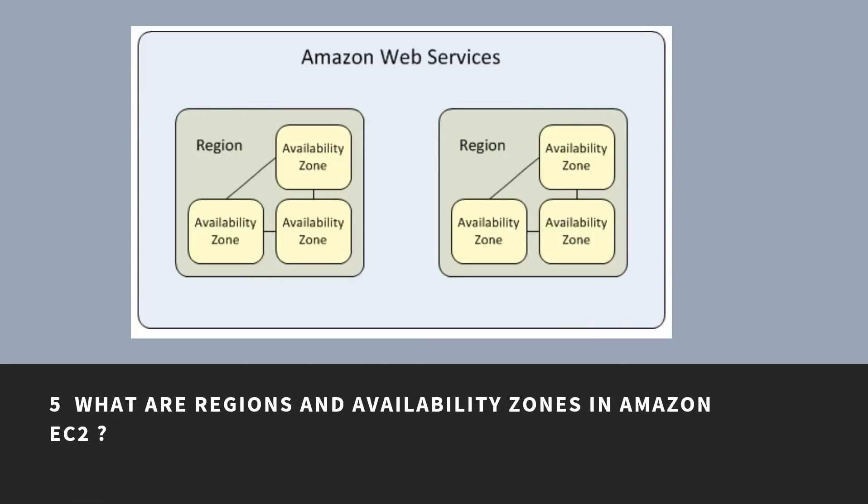What are regions and availability zones in Amazon EC2? Amazon EC2 is hosted in multiple locations worldwide. These locations are composed of regions and availability zones. Each region is a separate geographic area with multiple associated availability zones. Each region is completely independent and each availability zone is isolated. However, the availability zones in a region are connected through low-latency links, as shown in the diagram.